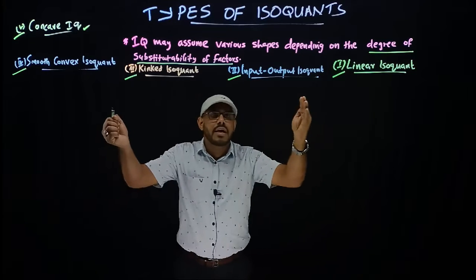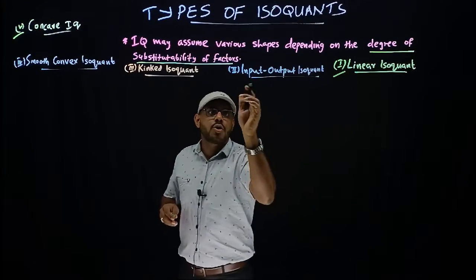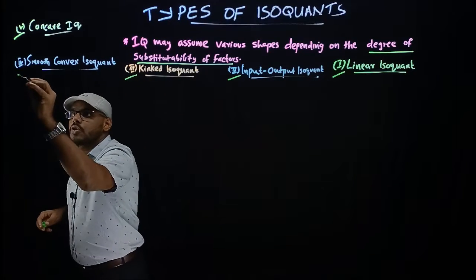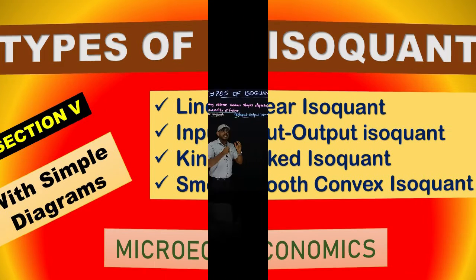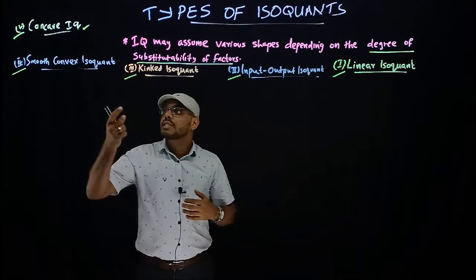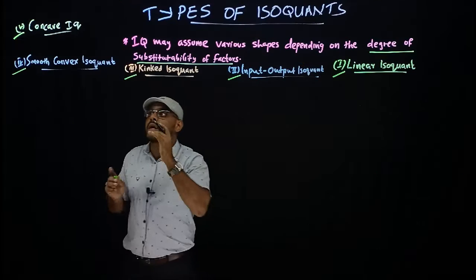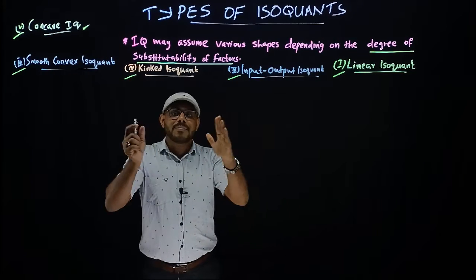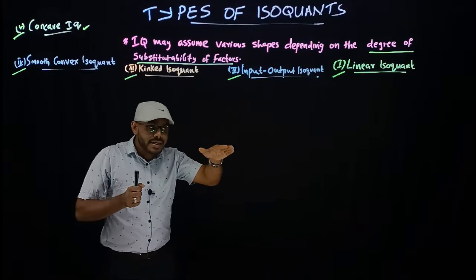The four important types of isoquants are: first, linear isoquant; second, input-output isoquant; third, kinked isoquant; and fourth, smooth convex isoquant. You should also include a diagram for each type. For a five-mark question on types of isoquants, you can cover these four types. If the question asks for a short note on a specific type, such as linear isoquant or kinked isoquant, you can address that individually.